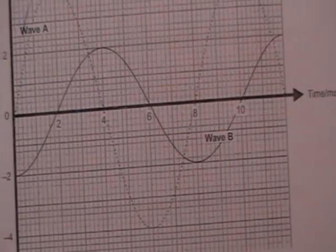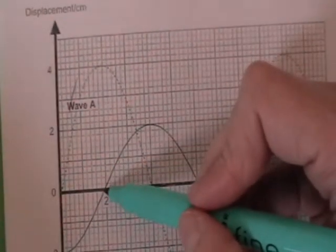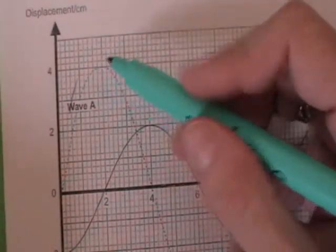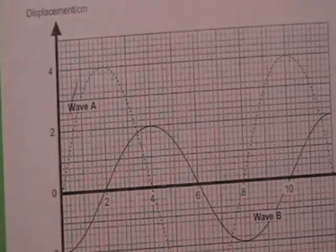It says state the amplitude of A. So A is the taller one. Have a wee look at that. That's from the rest position to the top of a crest. So that's going to be 4 cm you can see there from the graph.